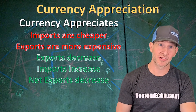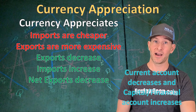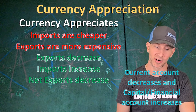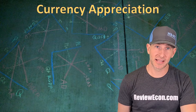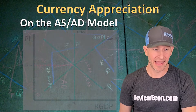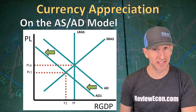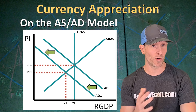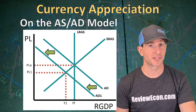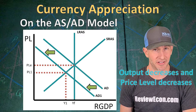If you connect that to the things you've already learned about the balance of payments, the balance on the current account is going to decrease and the capital and financial account balance is going to increase as a result. Looking at the impact of the decrease in net exports on the AS-AD model, the aggregate demand curve is going to decrease because net exports is one of those aggregate demand shifters. That means that the currency appreciation has caused output to decrease and the price level to decrease as well.